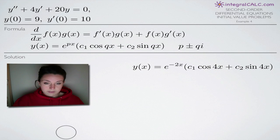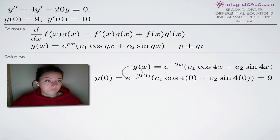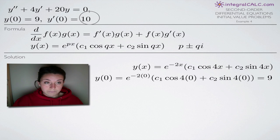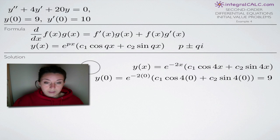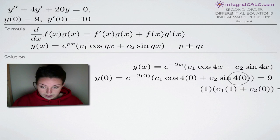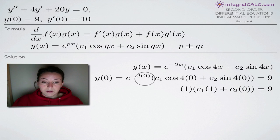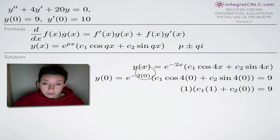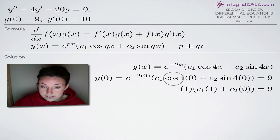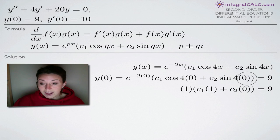So let's go ahead and start. We'll plug in the initial condition first, then take the derivative and plug in its corresponding initial condition. We have y(x), so we're going to take the initial condition y(0) = 9 — we'll plug in 0 for x and set it equal to 9. When we do that, we notice that the first term simplifies to e to the 0, and anything raised to the 0 power is 1, so this first term reduces to 1. As for everything inside the parentheses, c₁ and c₂ will remain. To evaluate cosine of 0 and sine of 0, you can use your calculator or the unit circle.